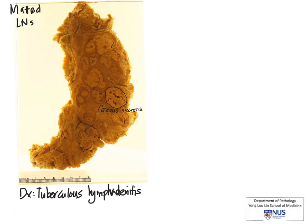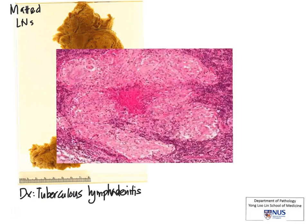What will the pathologist see? One of the most classical things we will see is a whole collection of plump cells, which are called epithelioid histiocytes — and therefore, these are granulomas. If you're observant, you'll actually see a little pinkish area here, and this is caseous necrosis. So in other words, we are looking at necrotizing granulomatous lymphadenitis.